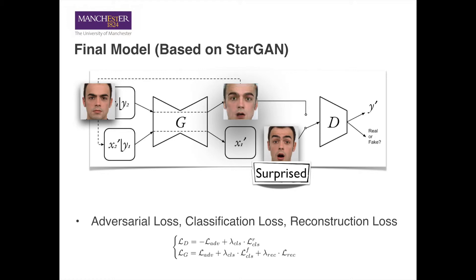The discriminator needs to classify an image into one of the seven expressions, as well as determine whether the input is real or fake.